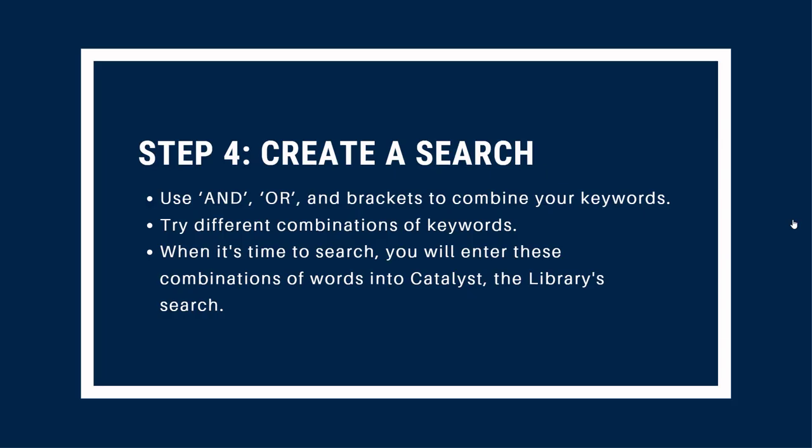Now it's time to group your words together to create your search. You can use the word AND between words to tell the search software that you want both of those words included in any search result. You can use the word OR between words to tell the software that you want one of those two words in any search result. If there's a term you want to omit from your search results, you can include that word preceded by the word NOT. When used in a search, these three words — AND, OR, and NOT — are called Boolean operators.